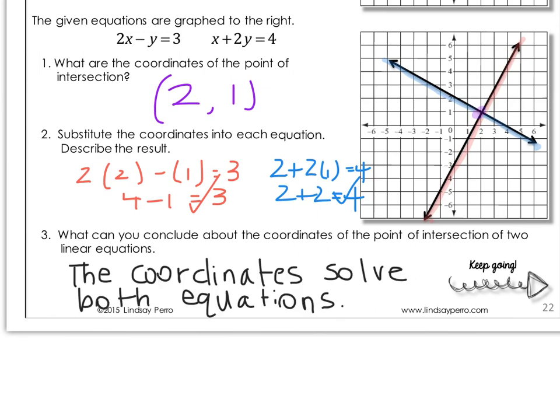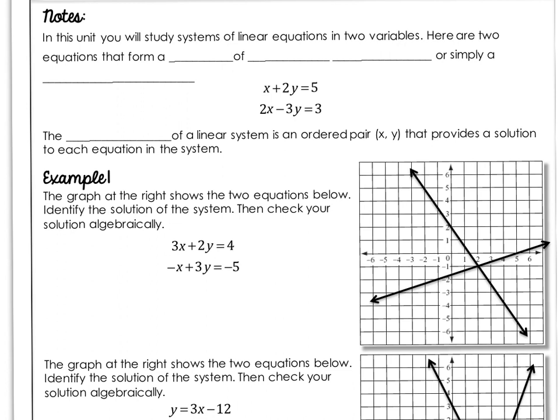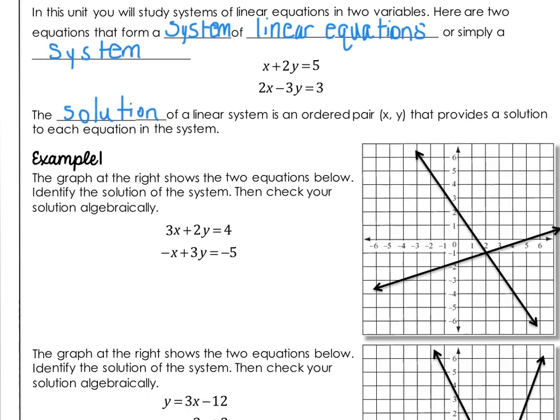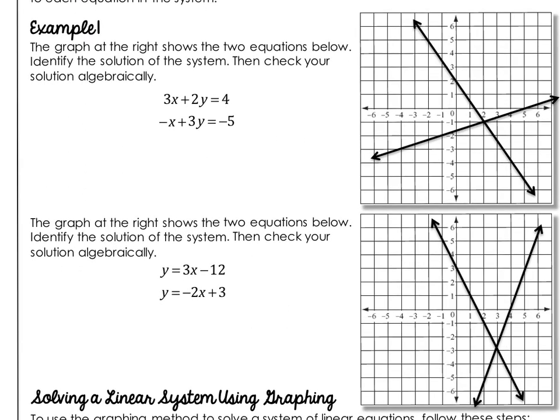In this unit, you will study systems of linear equations in two variables. Here are two equations that form a system of linear equations. They have two variables, X and Y, and they're going to be solved simultaneously. The solution of a linear system is the ordered pair that provides a solution to each equation in the system. In example 1, you're given a graph with two equations — identify the solution of the system, then check your solution algebraically.